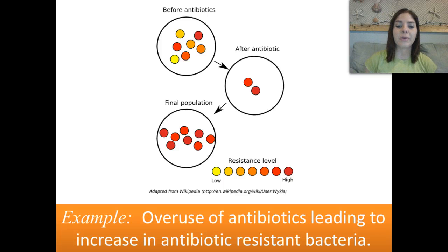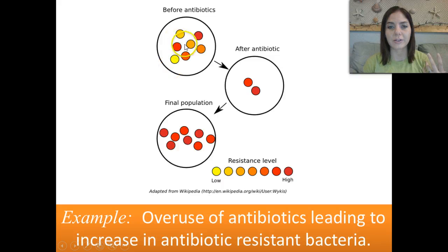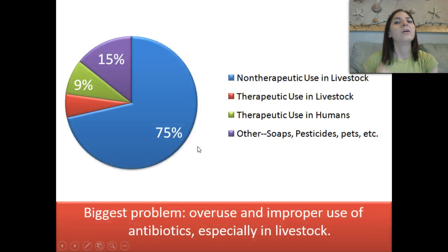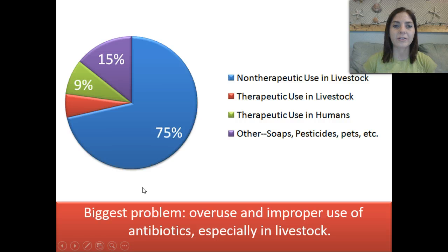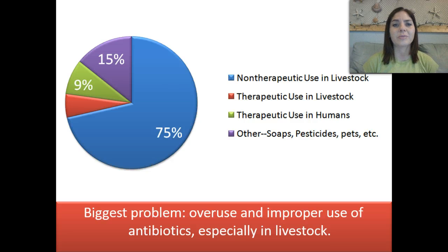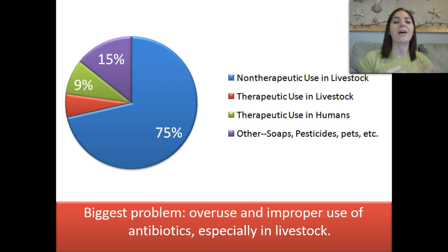Another thing that happens is the overuse of antibiotics, which has led to an increase in antibiotic-resistant bacteria. Here's a petri dish filled with different types of bacteria — we add an antibiotic, it wipes out most of the bacteria, but resistant bacteria are left to reproduce and create a more resistant strain. This pie chart shows what percentage of antibiotics are used for what. 75% of antibiotics are used for non-therapeutic use in livestock, meaning the livestock aren't even sick yet — it's a preemptive measure because they're kept in very close, dirty quarters.